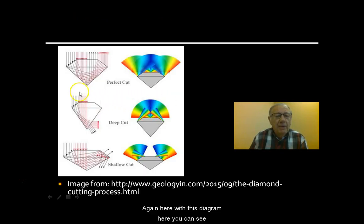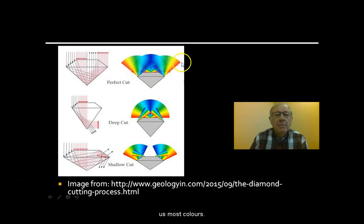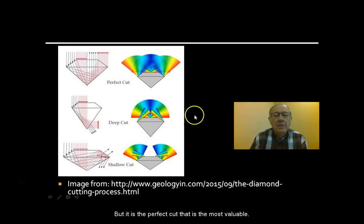Again, here with this diagram you can see light coming in, undergoing total internal reflection, and coming out the front. The perfect cut gives us the most colors. Deep cuts and shallow cuts give us some sparkle too, but it's the perfect cut that is the most valuable.